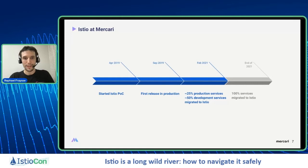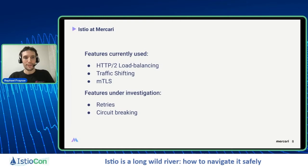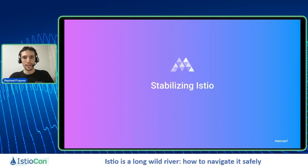What we are currently using, as far as features are concerned: we are mainly using HTTP/2 load balancing, some traffic shifting, mTLS in permissive mode, and we are currently investigating retries and circuit breaking. The first half of this presentation will be about explaining how to stabilize Istio and how we proceeded into making it.